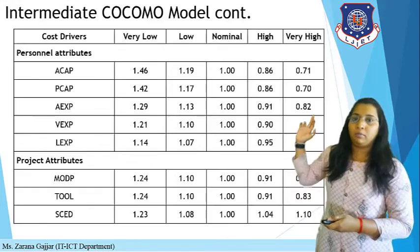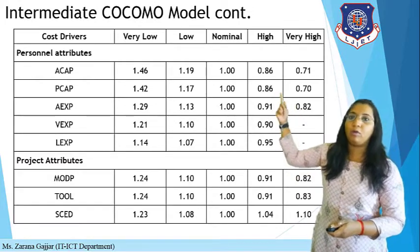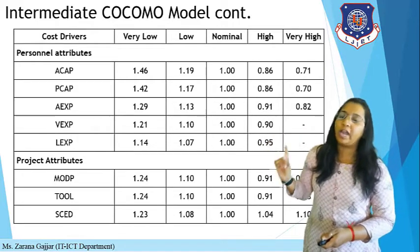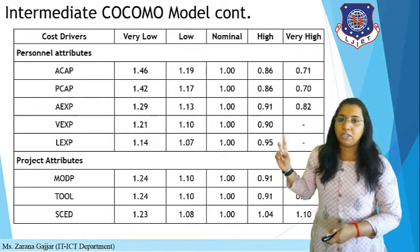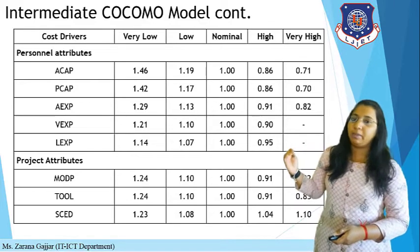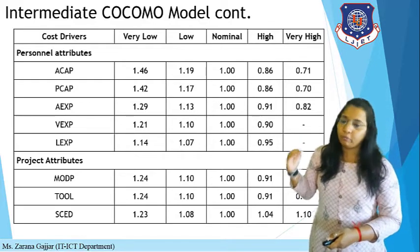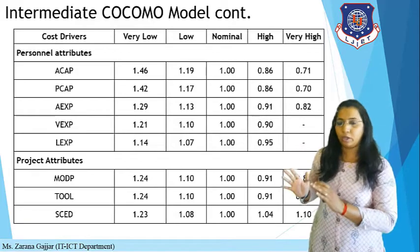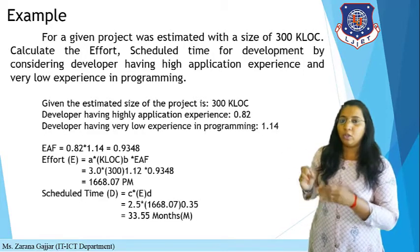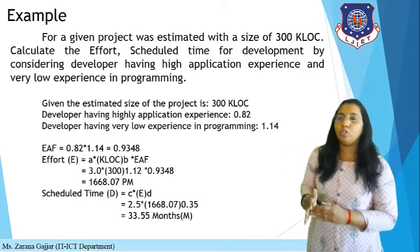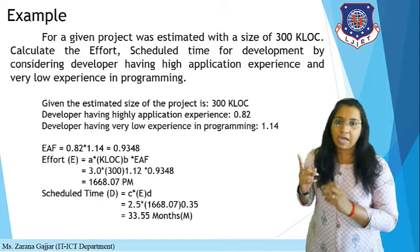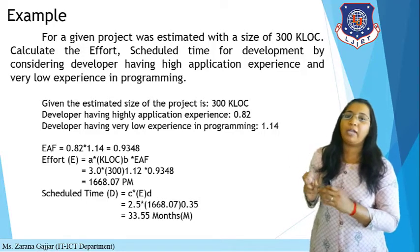The multiplication of 0.82 and 1.14 gives the EAF value. If there are multiple parameters, you multiply each one together to get a single EAF. In this case, the EAF is 0.93.